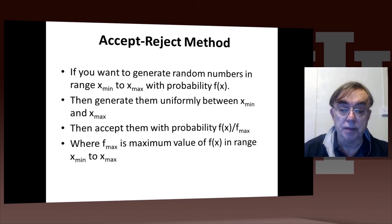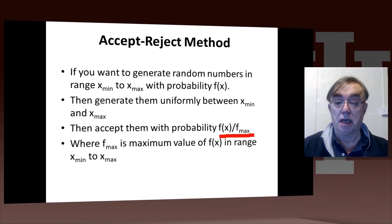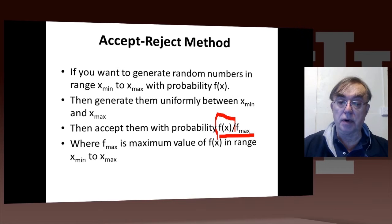You accept them with a probability f(x) over the maximum value of f. In our case, f_max was 1, so we just had f(x). That's 1 minus a half into x minus 110 over 30.